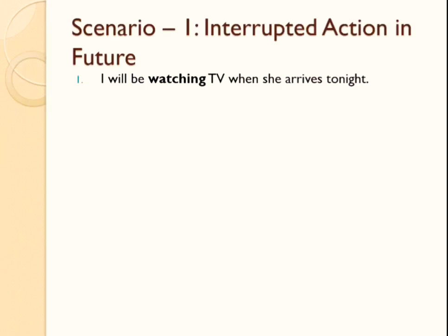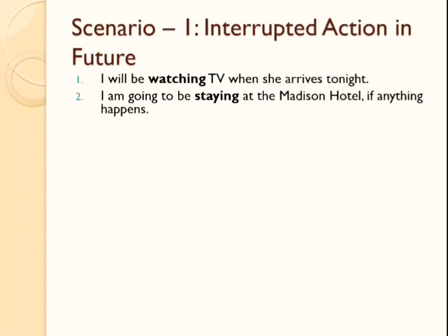Let me give you another example: 'I'm going to be staying at the Madison Hotel if anything happens.' Again, two events are going to unfold in future — me staying at the Madison Hotel, and anything happening. The interruption here is something happening, and the ongoing action is staying in the hotel. So remember: if there is an ongoing action which will be interrupted and all of these things are going to happen in future, you use the future continuous tense.